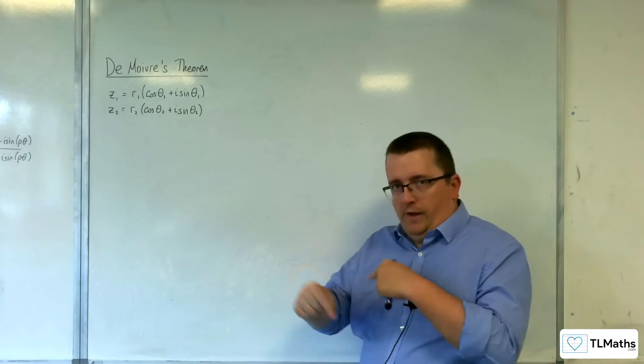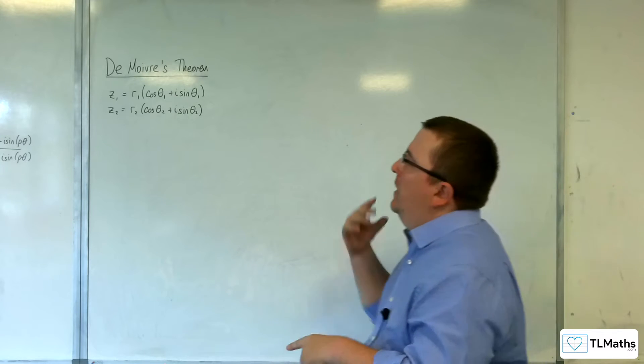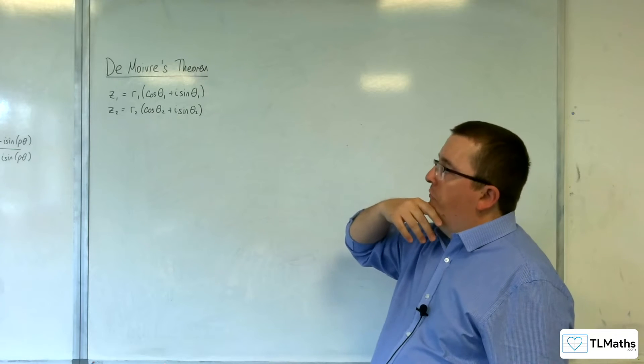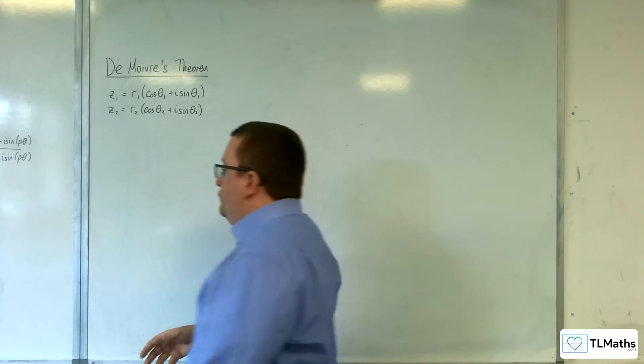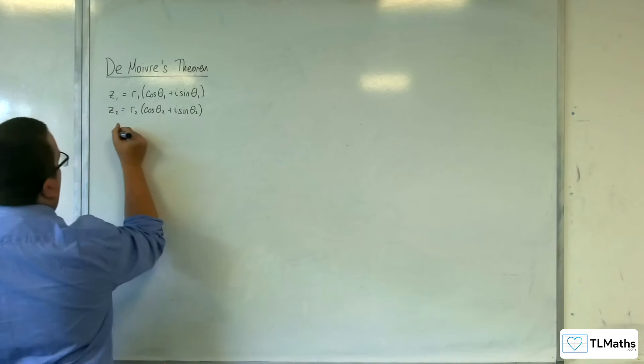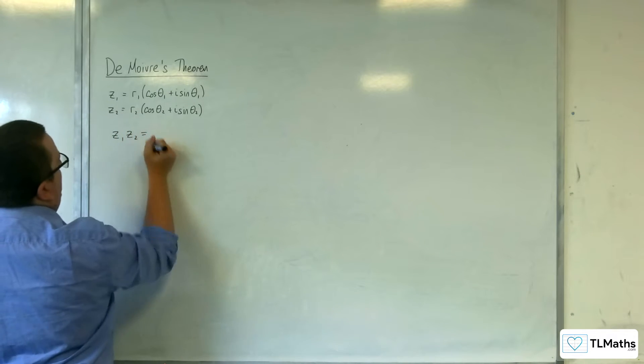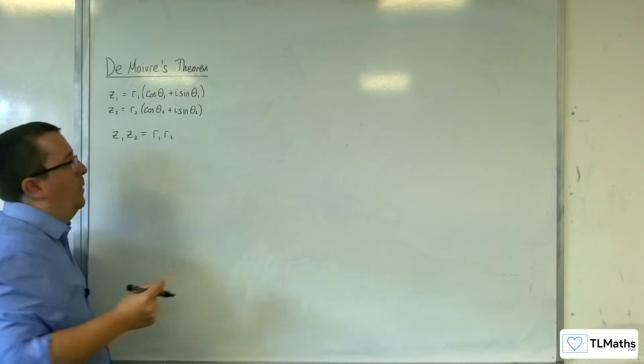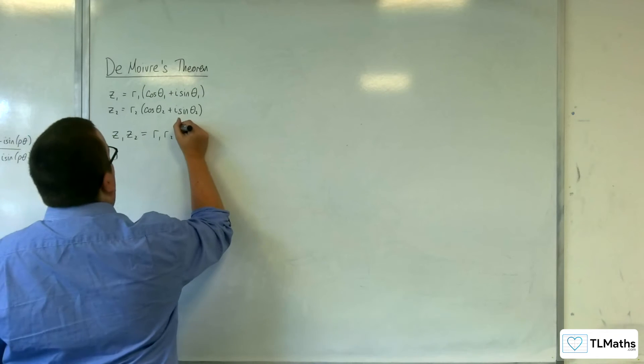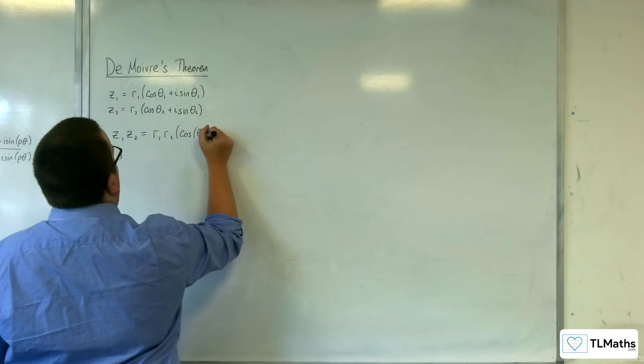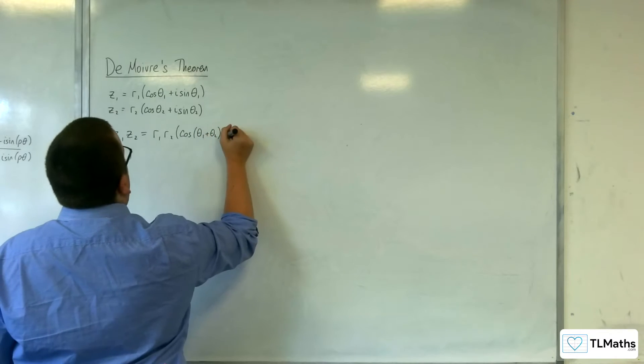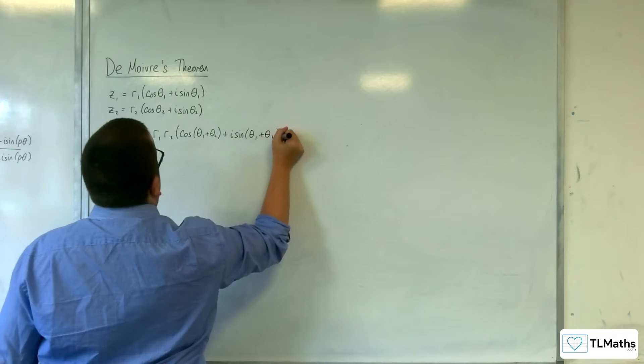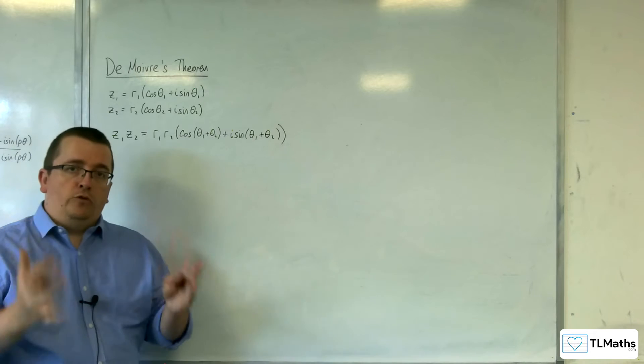Let's rewind and go back to thinking about if I've got two complex numbers, Z1 and Z2, written in modulus argument form. We saw that if you multiplied Z1 by Z2, that would be the same as multiplying the two moduli, r1 and r2, and you add the arguments. So you get cosine of theta1 plus theta2 plus i sine of theta1 plus theta2. That's what we've already seen in this section.